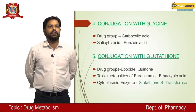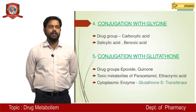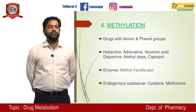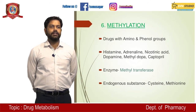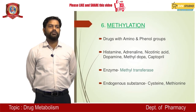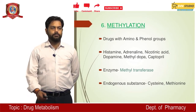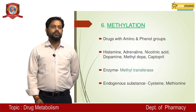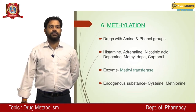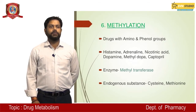Conjugation with glycine: drug group is carboxylic acid — examples include salicylic acid and benzoic acid. Methylation: drugs with amino and phenol groups — examples include histamine, adrenaline, nicotinic acid, dopamine, methyldopa, and captopril. The enzyme is methyltransferase. In Phase 2 reactions, methyltransferase is present in most reactions. The endogenous substance is methionine.